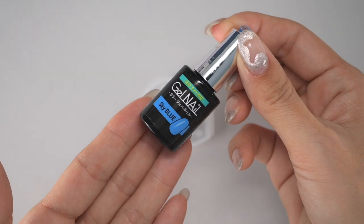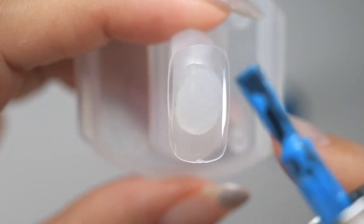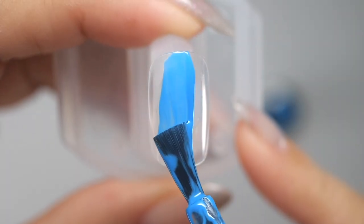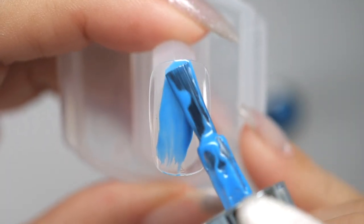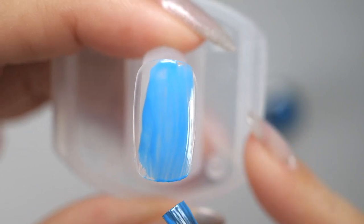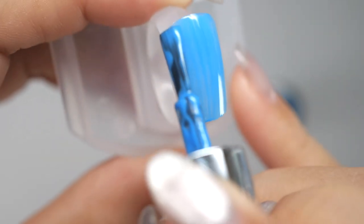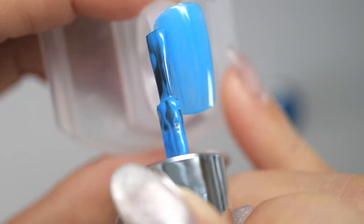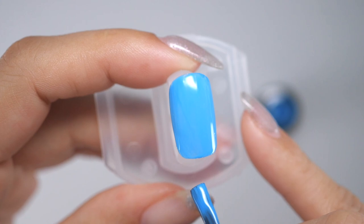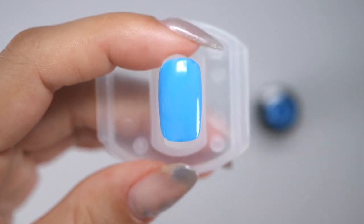First, let's apply the base color gel. I will use this sky blue color, but any color can be used, so please use a matte color that will not show through your nails. When you have finished applying the entire surface, cure it.